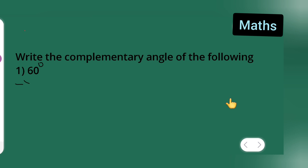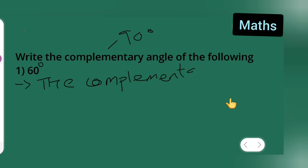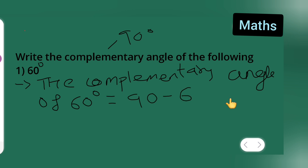For complementary angles, it is always 90 degrees. So the complementary angle of 60 degrees is equal to 90 minus 60, which is equal to 30 degrees.